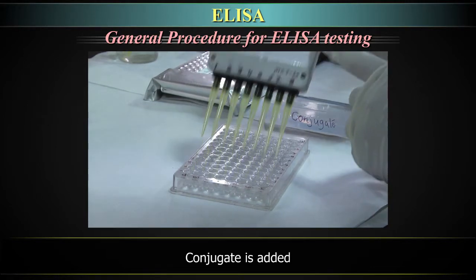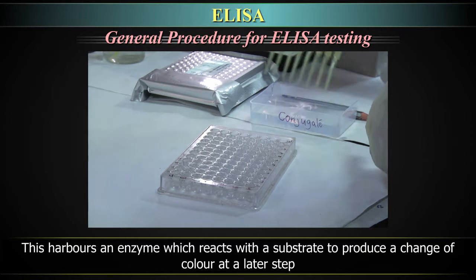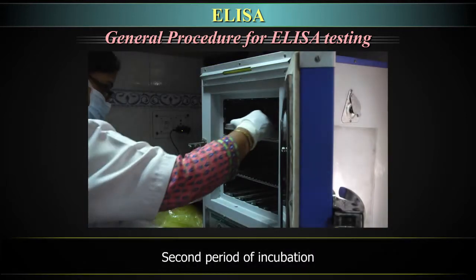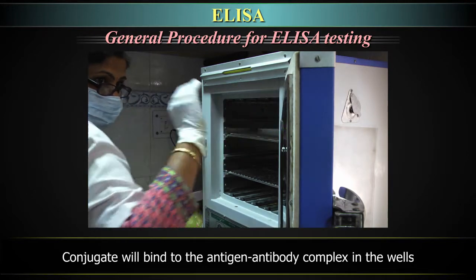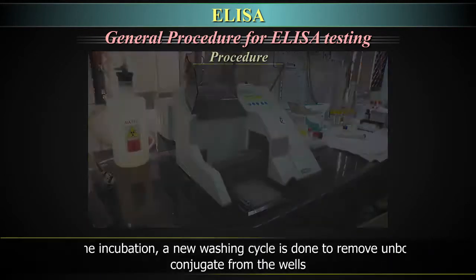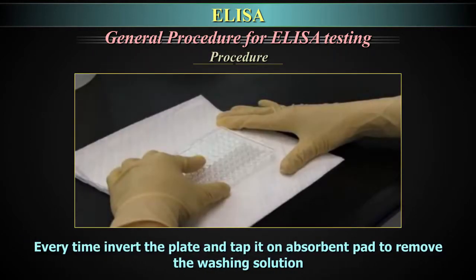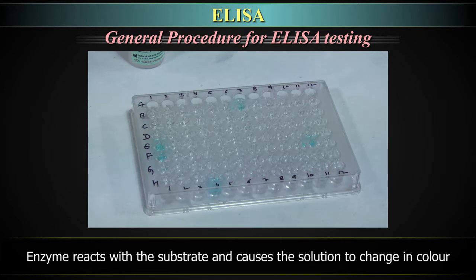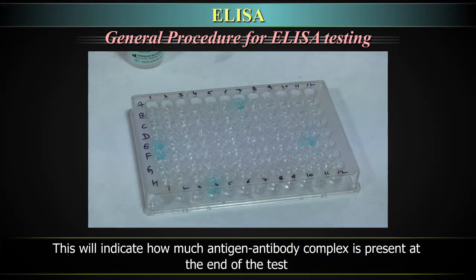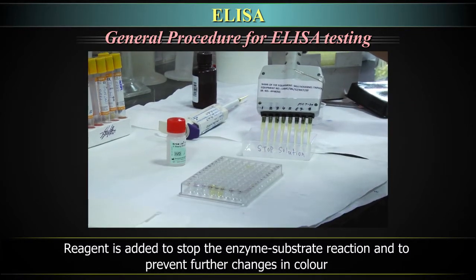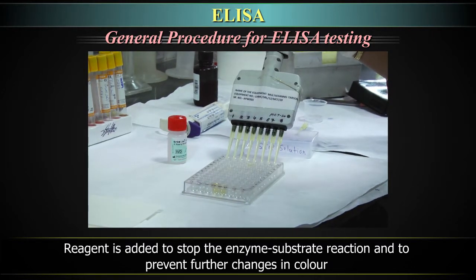Next, the conjugate, which is the secondary antibody, is added. This harbors an enzyme which reacts with the substrate to produce a change of color at a later step. Then begins a second period of incubation during which the conjugate will bind to the antigen-antibody complex in the wells. After the incubation, a new washing cycle is done to remove unbound conjugate from the wells. Every time, invert the plate and tap it on an absorbent pad to remove the washing solution. A substrate is added and the enzyme reacts with the substrate, causing the solution to change in color. This indicates how much antigen-antibody complex is present at the end of the test. Once the incubation time is completed, a reagent is added to stop the enzyme-substrate reaction and to prevent further changes in color.